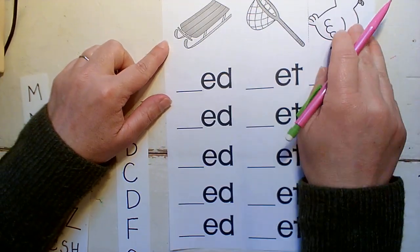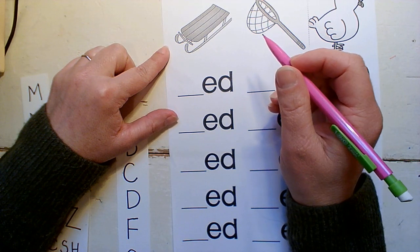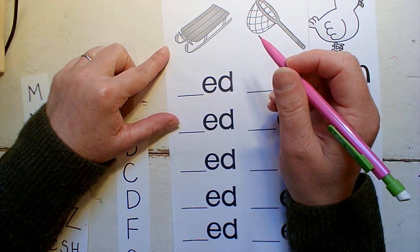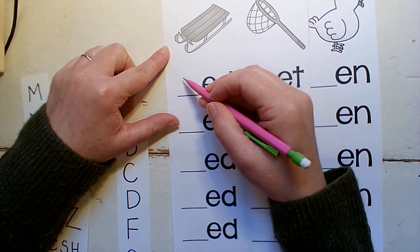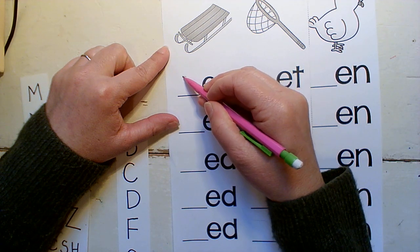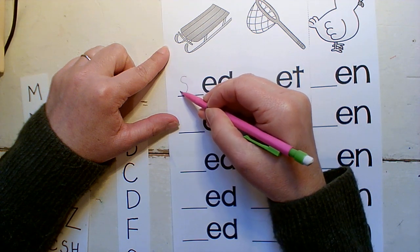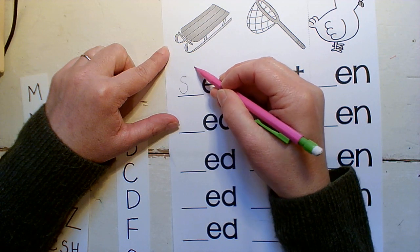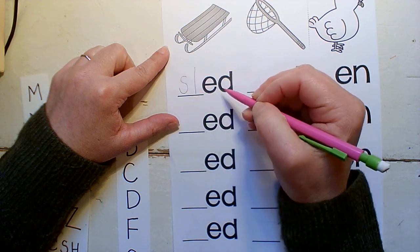So that would be two letters that go together. Sl, sl. What two letters are those? Sl, sl. S, sl, L. Sled.